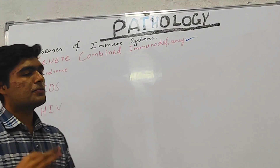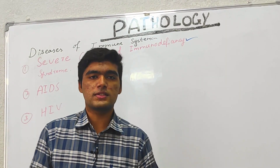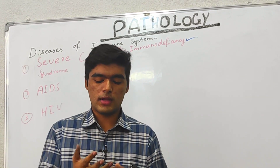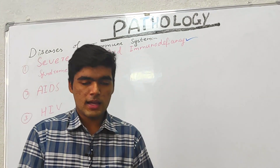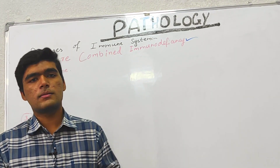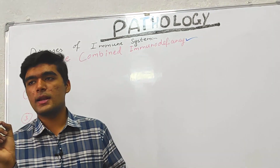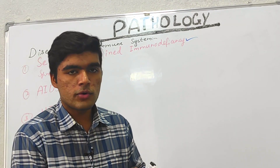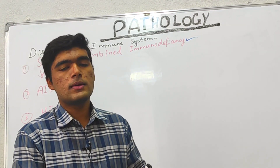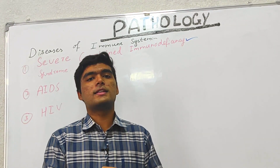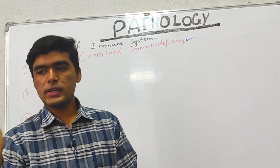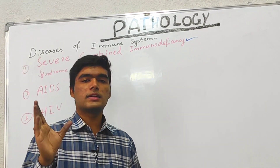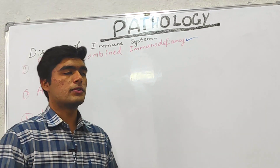Furthermore, we have three main conditions. First is combined immunodeficiency syndrome, in which the immune system produces T and B lymphocytes immaturely in both the humoral immune system and cell-mediated immunity. So in both cases, immune cells T and B are immaturely produced.